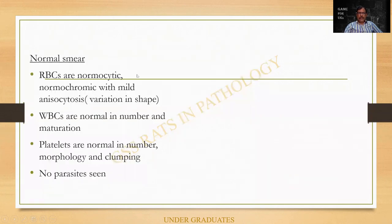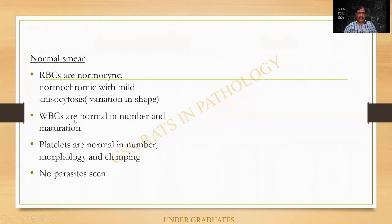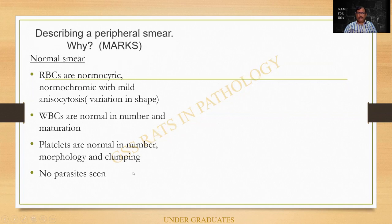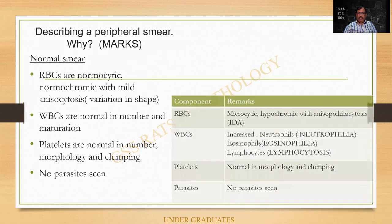In a normal smear, you are supposed to not only do a differential count — after staining, you are supposed to describe the smear because it carries 10 to 15 marks. So for RBCs, write it as normocytic, normochromic, with very mild anisocytosis and variation in shape. WBCs — usually give it as normal, but if you find an increase in neutrophils, mention it as neutrophilia. Platelets are normal in number, morphology, and clumping. No parasites seen. This is how you should describe a normal smear.